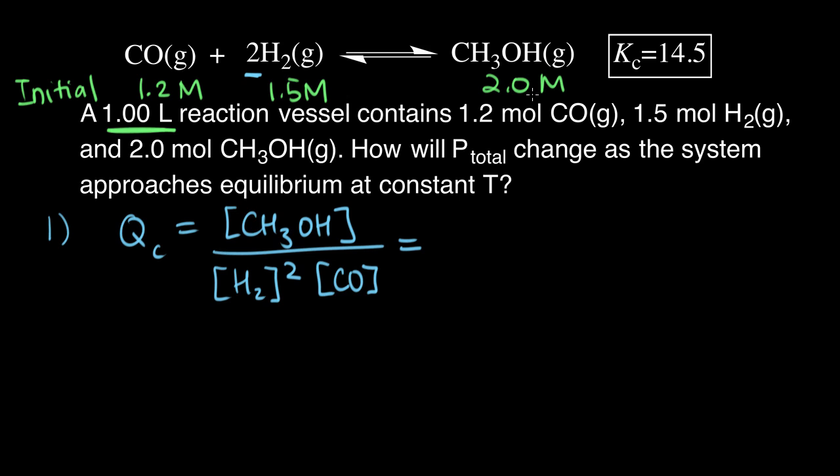So now we can plug these concentrations into our expression for Q. And then we get, in our numerator, 2.0, and our denominator is 1.5 squared times 1.2. So if we plug this all into our calculators, what I got is that our Q for this particular moment in time, with these concentrations, is 0.74.